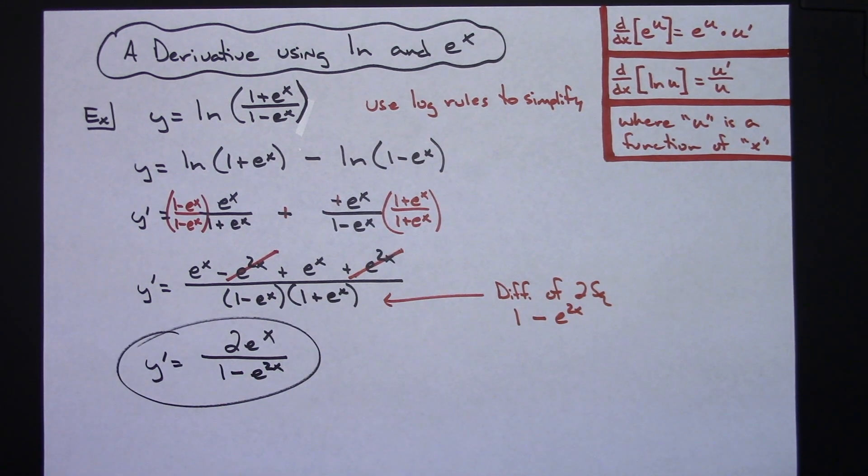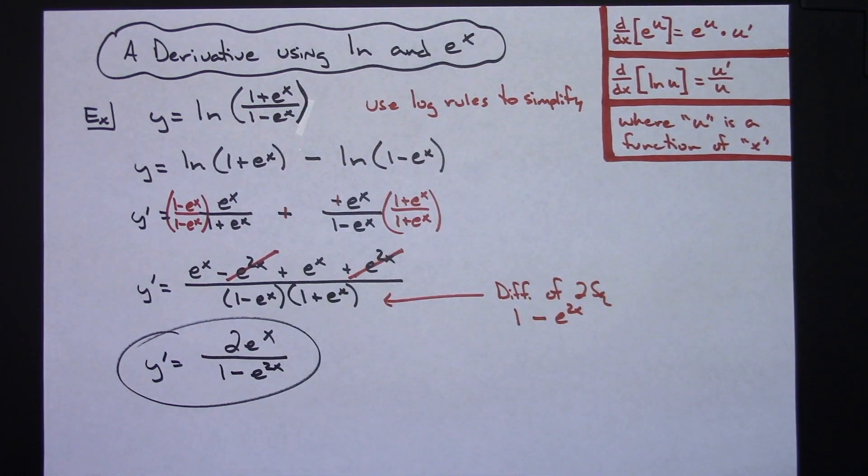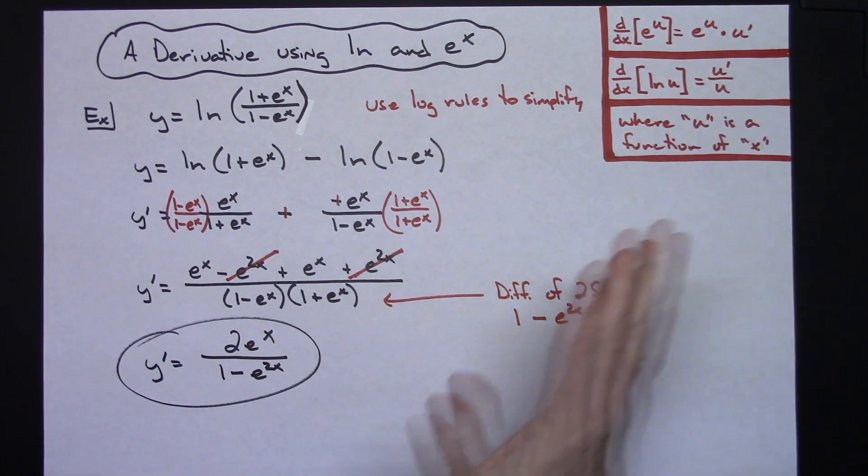So pretty much a straightforward easy derivative if you take the right approach to this. Use those log rules first to simplify that expression, don't always just automatically do the u prime over u because it can be more complicated doing it that way.